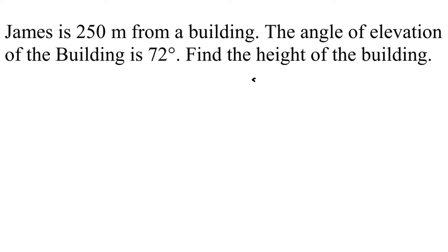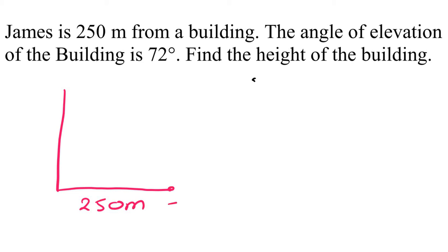Let's look at this example: James is 250 meters from a building. The angle of elevation of the building is 72 degrees. So it's obviously looking up from here up to the building. I just connect this — so this is the angle of elevation, which is 72 degrees.